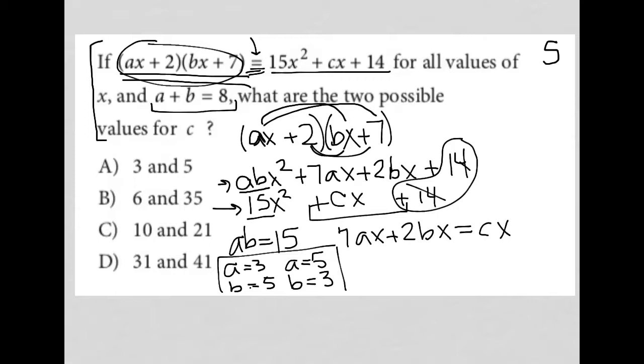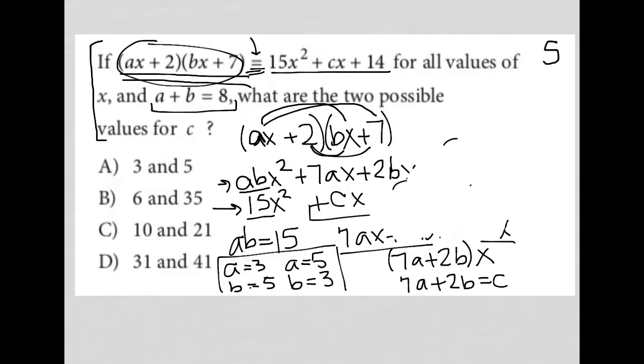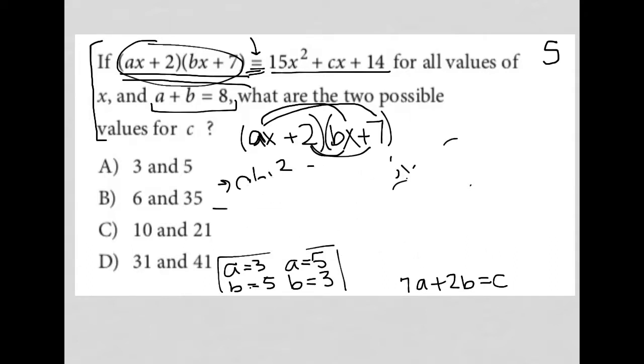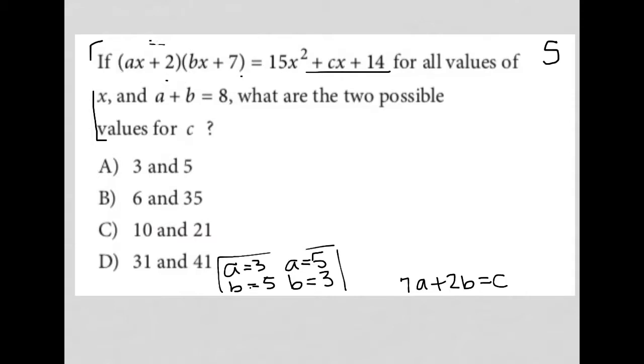Over here, with 7ax plus 2bx equals cx, I can factor out the x. So I'd have 7a plus 2b parentheses x. I just removed x from both terms there. So that tells me that 7a plus 2b must equal c. Because again, these two sides of the equation have to be the same. So now I'm going to make some space here above what I now know, that 7a plus 2b equals c, and that either a equals 3 and b equals 5, or a equals 5 and b equals 3. Let's get rid of all of this.